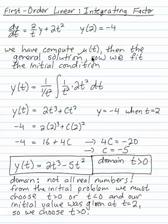So we've computed mu of t, and we've computed the general solution. We just need to fit our general solution with the initial condition.